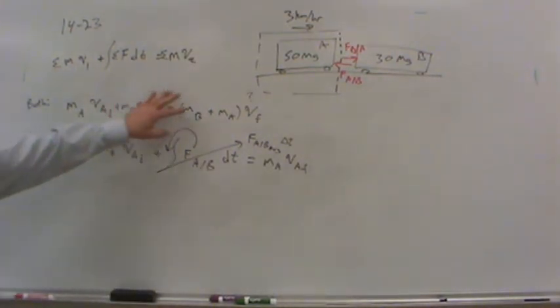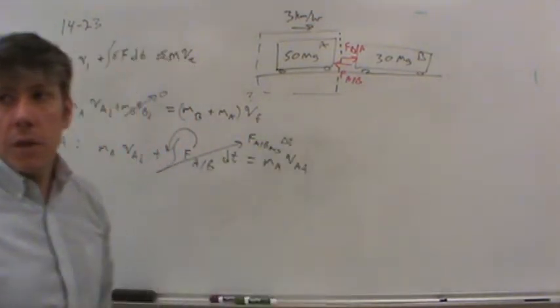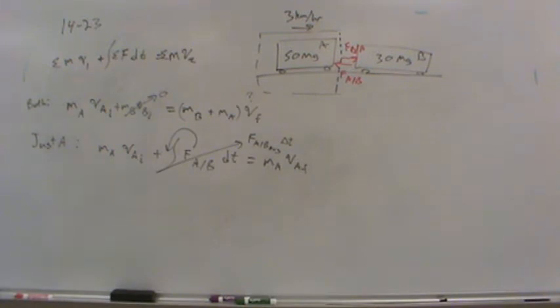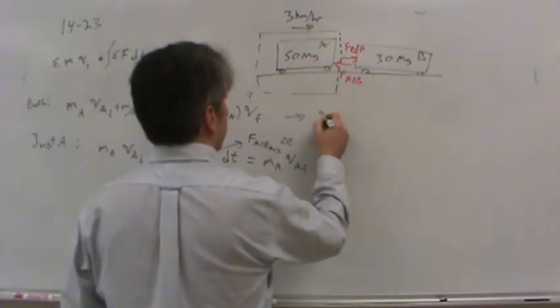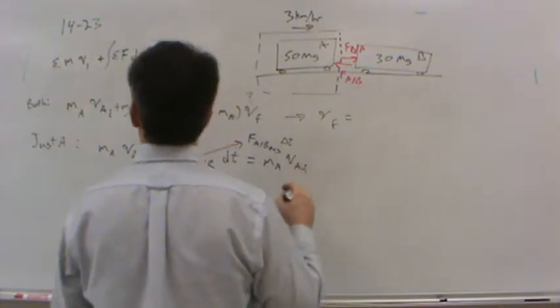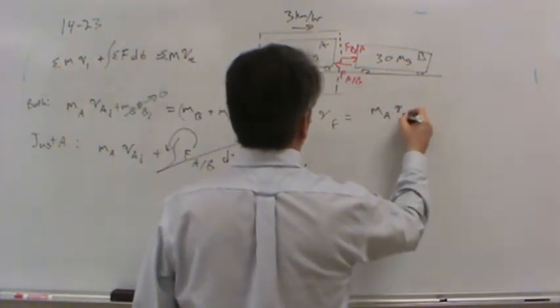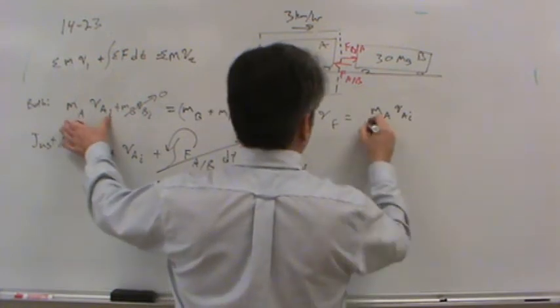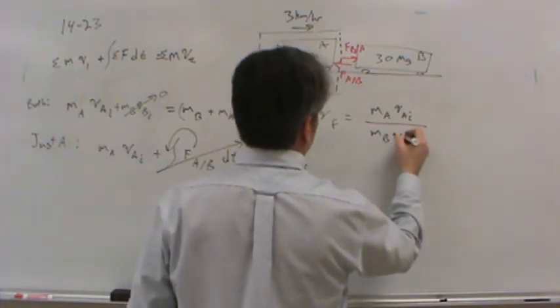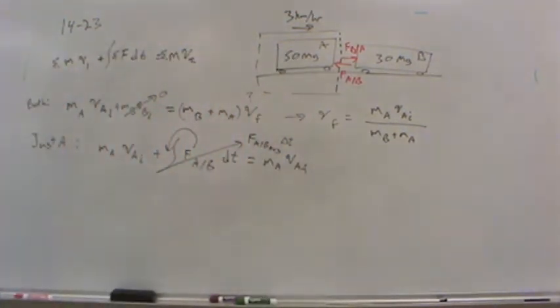Now, there are these simplifications. You may notice these simplifications along the way and just not write a term. For example, you might just not write this one. I would say that that's something you shouldn't do when you're learning how to use these equations. I say you should write out the whole equation and cross off things. So, you make it very clear in your mind that I'm throwing this term away because B does not move initially. Okay? So, don't try to go too fast initially. So, anyway, let's get the final velocity. It should be pretty straightforward. The final velocity of these two would be the mass of A multiplied by the initial velocity of A, which is the initial momentum of the system. Mass of B plus mass of A in the denominator.